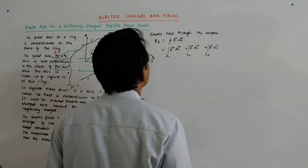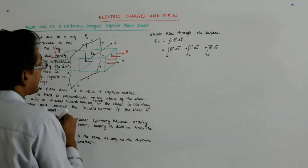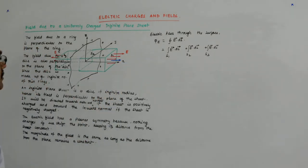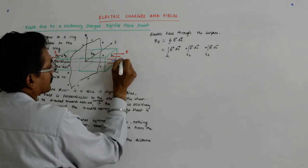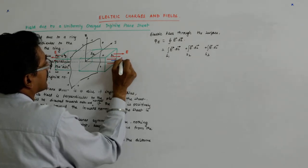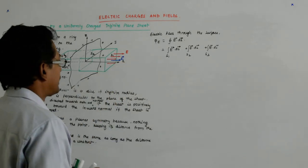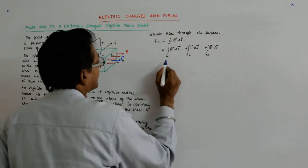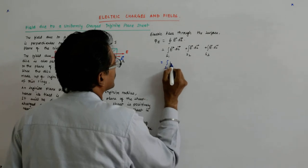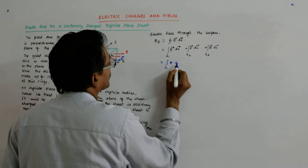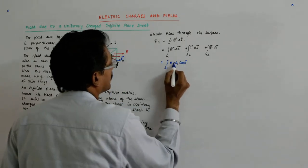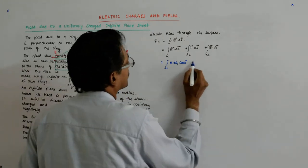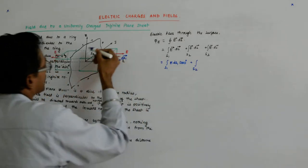What is E dot dS on S1? This is a planar surface and its area vector points in a specific direction — call it the S1 vector. We can see that E and the S1 vector point in the same direction, so their angle is 0. So we write the integral over S1 as E into dS1 into cos 0.